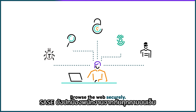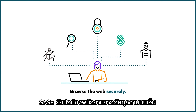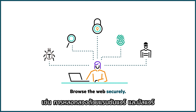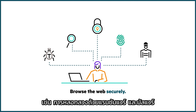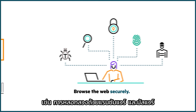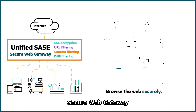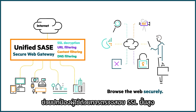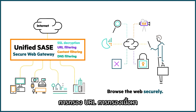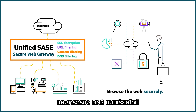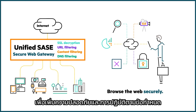SASE also protects employees from web-based threats like ransomware, phishing, and malware. Secure Web Gateway protects users with advanced SSL inspection, URL filtering, content filtering, and DNS filtering in real time for improved security and compliance.